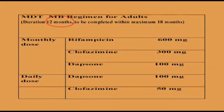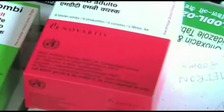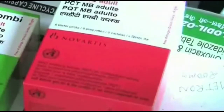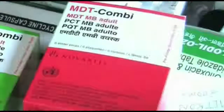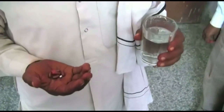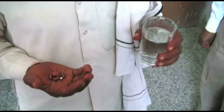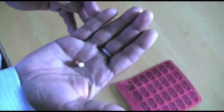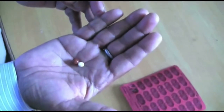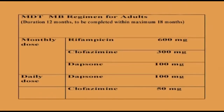For MB leprosy, treatment is given for 12 months. Here are the 12 blister calendar packs. The monthly dose is taken at the start of each pack on day 1. The daily dosages are taken for 28 days for 12 months. To be effective, the MB course must be completed within 18 months or less.